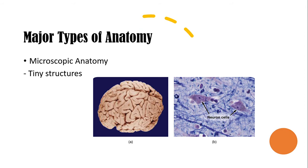Microscopic anatomy is the study of tiny anatomical structures, for instance tissues and cells. This is an image of a micrograph of nerve cells from the brain. We need the help of a microscope to see these neuron cells — we are not able to see them with the naked eye.